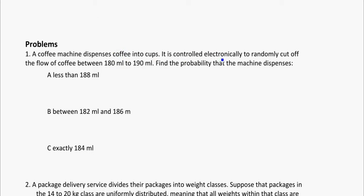Coffee machine dispenses coffee into cups. It's controlled electronically to randomly cut off the flow between 180 and 190. So I know my max and my min, 180 and 190. Find the probability that the machine dispenses less than this. So first thing I'm going to do is find my height. And that's going to be 1 over 190 minus 180. 1 over 10 is equal to 0.1.